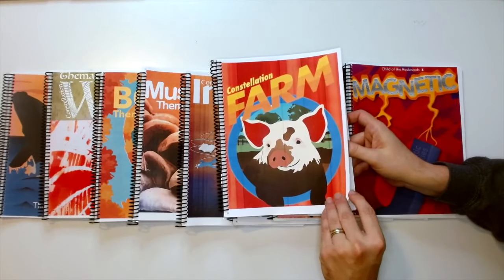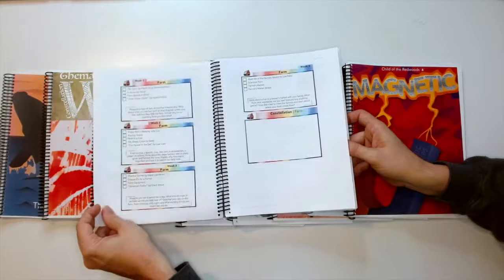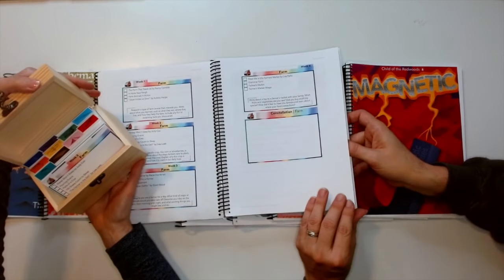Each month, you're going to get a new pack. This is Farm. At the beginning, you're going to find a set of the Montessori planning cards.